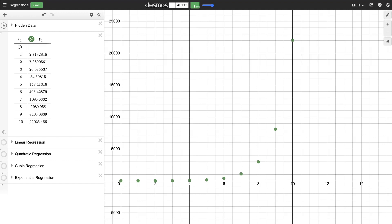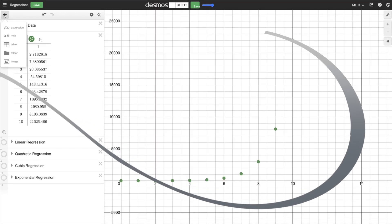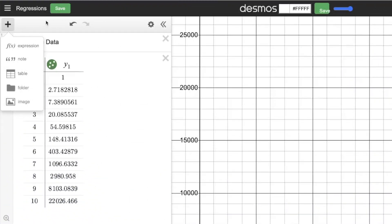Now first of all, before you do a regression, you're going to need a table of values. So you see here I have x1 and y1 in a table of values. You can get to that by clicking on table in that little addition menu. Now once you have your table of values input, which you can either type in directly or you can copy and paste from a spreadsheet,